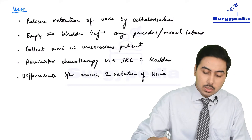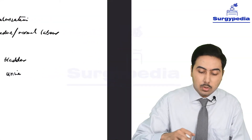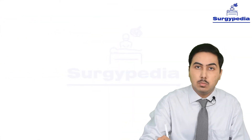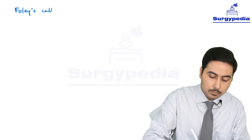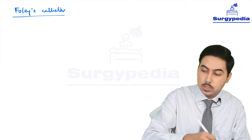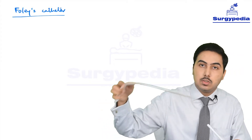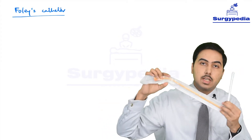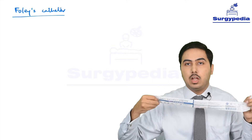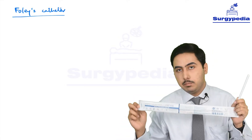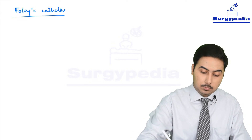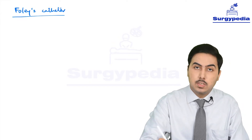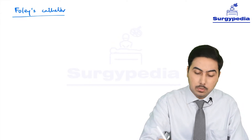We are done with the simple rubber catheter. The next catheter we need to talk about is a very famous one — Foley's catheter. I have one Foley's catheter with me here, and I'll show it to you in close view as well. We'll talk about the various parts of Foley's catheter when we see the close-up view.